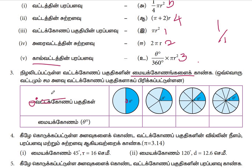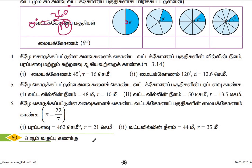The formula is: theta degrees equal to 360 degree by n. The total number of parts will be divided in 360 degrees. So in 360 degrees we will divide the number of parts. Theta degrees equals 360 divided by the number of parts.